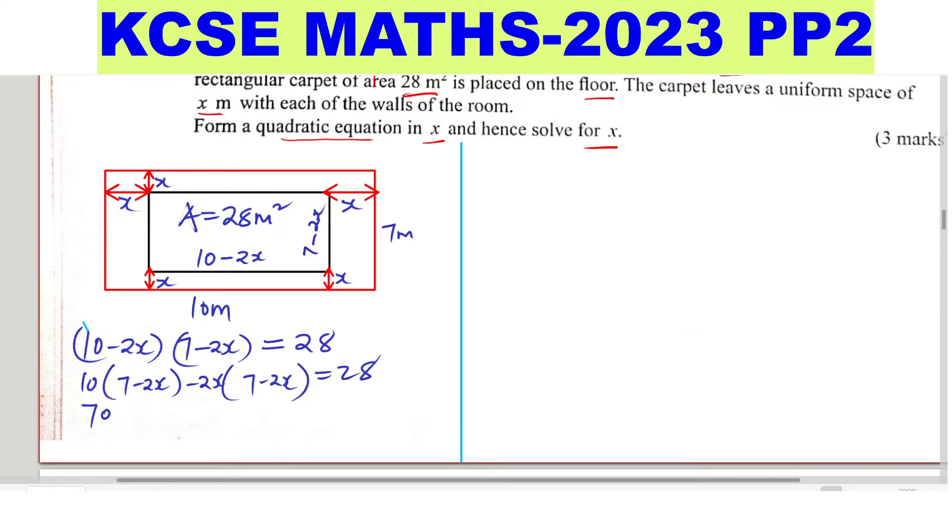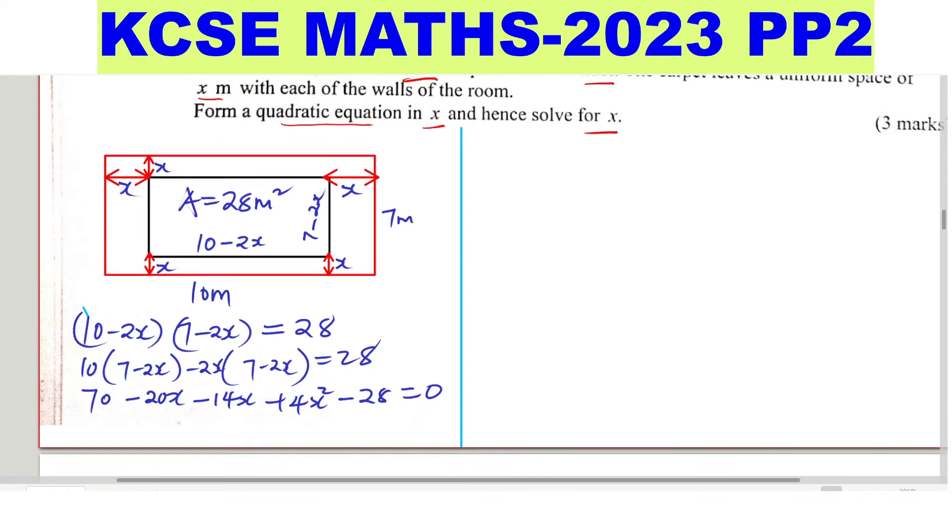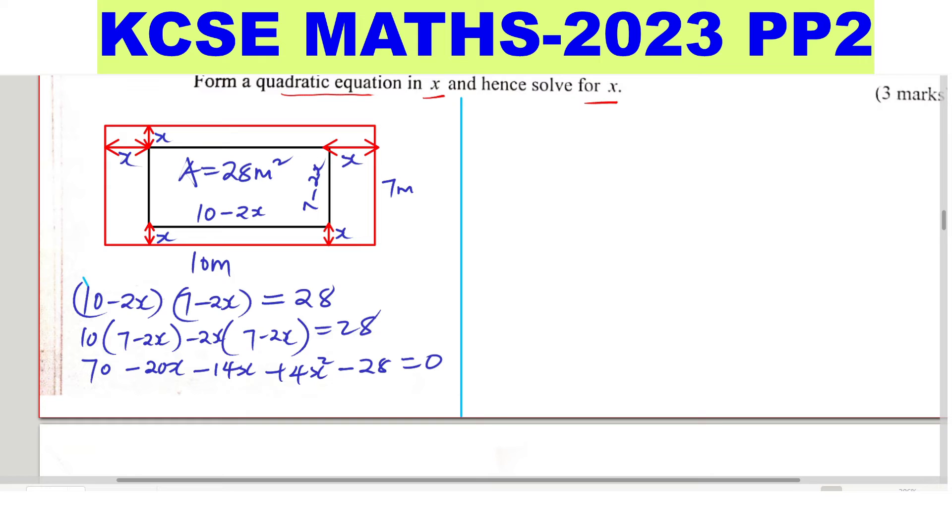This will give 70 minus 14x minus 14x plus 4x squared. Then you can bring 28 to the left-hand side. So this one will simplify to 4x squared minus 34x, and you collect the like terms, plus 42 equals 0.